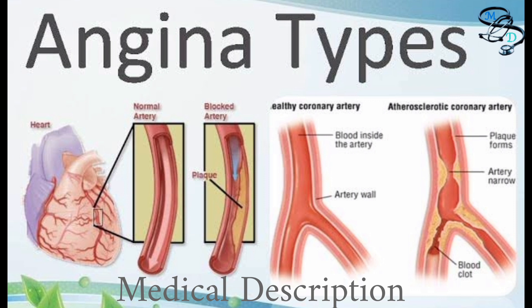The fourth type is microvascular angina. This condition affects the heart's smallest coronary arteries. It is brought about by spasm within the walls of the blood vessels. The pain may be more severe and last much longer than other types of angina.